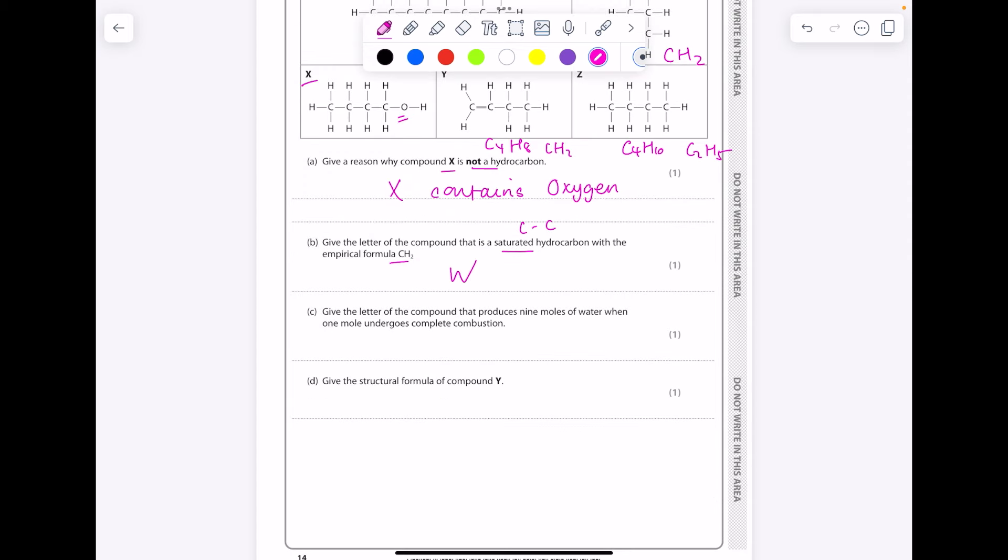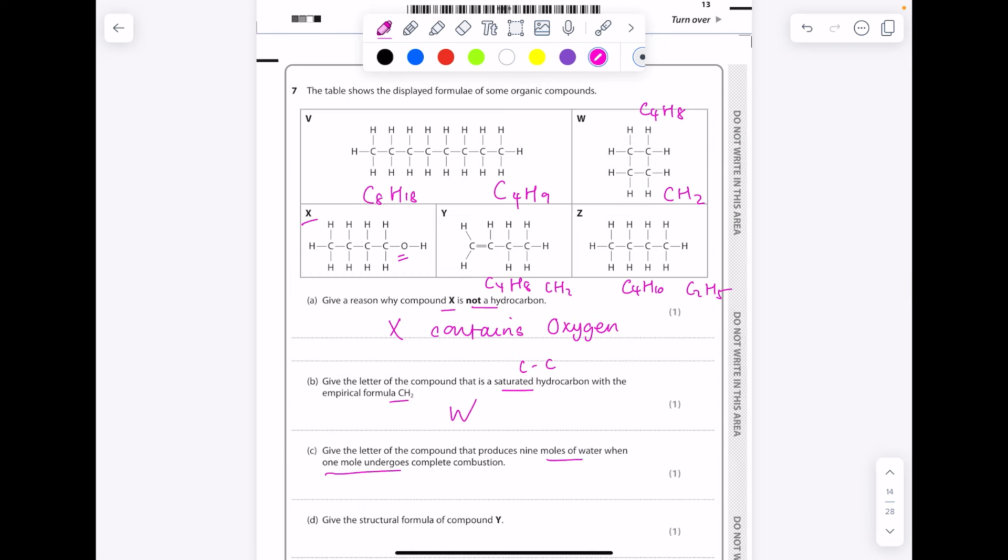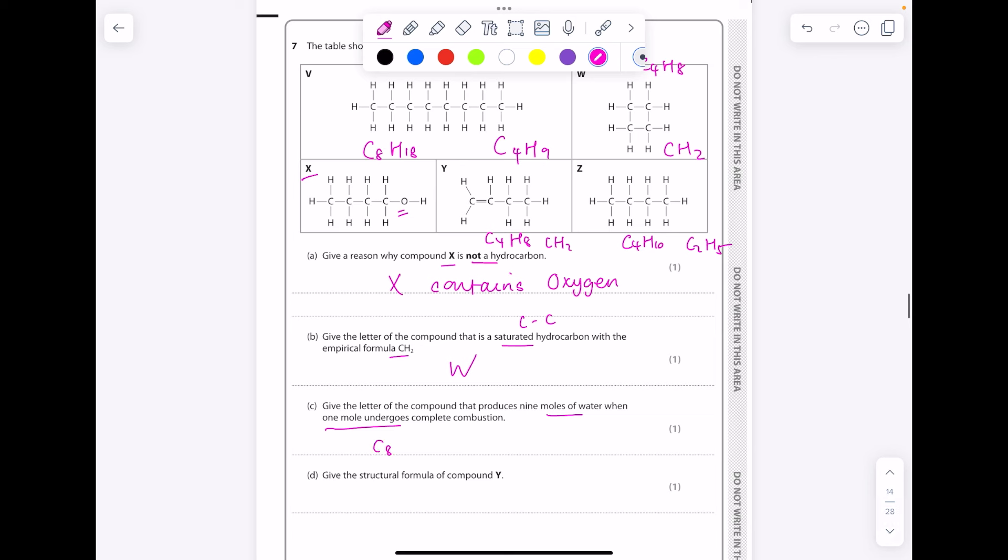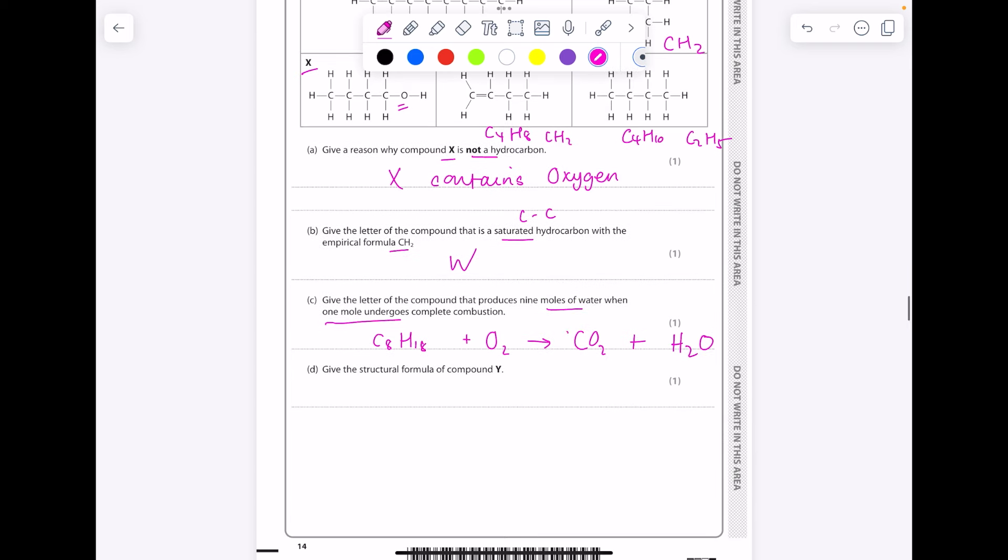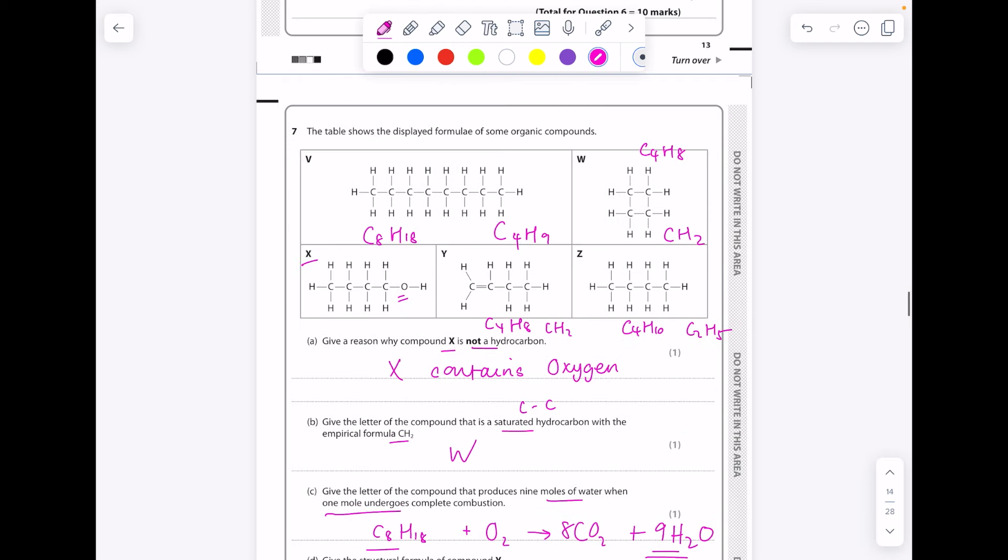Give the letter of the compound that produces 9 moles of water when 1 mole undergoes complete combustion. So we need to work our way through these molecular formulas, completely combusting them, which means supplying lots of oxygen so that carbon dioxide and water are the byproducts. Get it balanced. And you can see that we have 1 mole undergoing complete combustion producing 9 moles of water, which is why it's actually V.